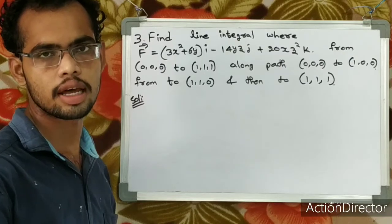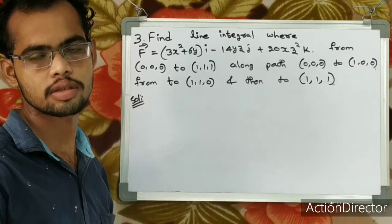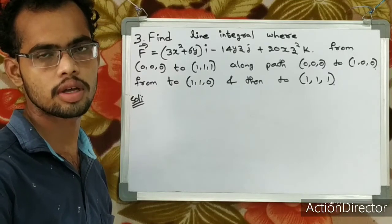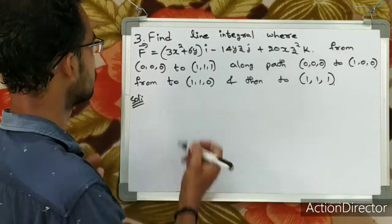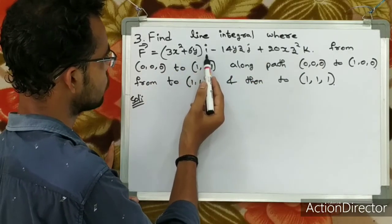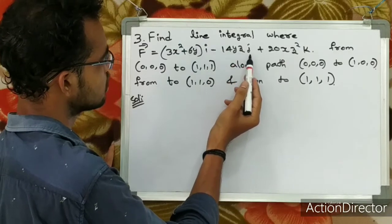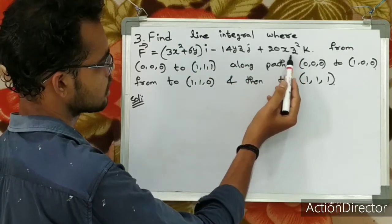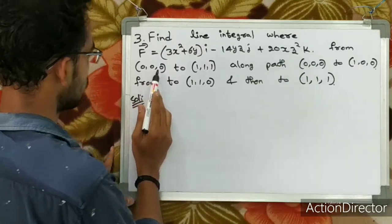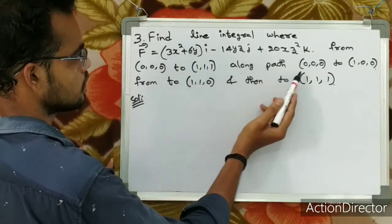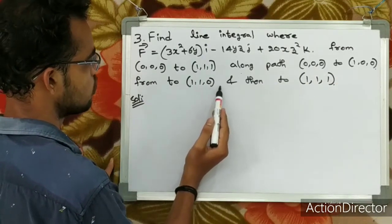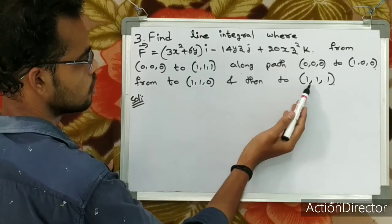Today we are going to take a line integral. In the last two classes we had two problems; this is the third problem. Find the line integral where f vector is equal to 3x squared plus 6y into i minus 14yz j plus 20xz squared k, from (0,0,0) to (1,1,1) along the path (0,0,0) to (1,0,0), to (1,1,0), and then to (1,1,1).